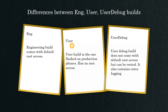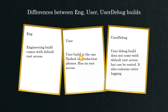User build is the one flashed on production phones — the normal personal phones that we all use. There are multiple brands and different OEM manufacturers, and all of them release their products in the form of user build. Here we don't have root access because we are not developing anything; we are just using certain features provided by the manufacturers.